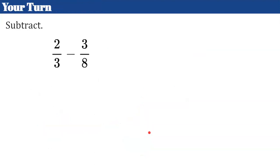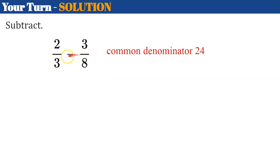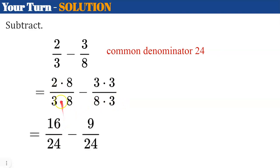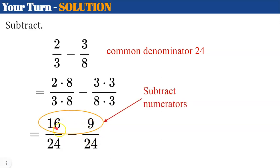Your turn. I'd like you to find the difference — go ahead and subtract, and come back when you're ready to check your work. Welcome back. We're going to find a common denominator of 24. Three and eight do not have any factors in common, so 3 times 8 is 24. For two-thirds, multiply both numerator and denominator by 8. For three-eighths, multiply both numerator and denominator by 3. Two times 8 is 16 over 24, and 3 times 3 is 9 over 24. Subtract the numerators: 16 subtract 9 gives me 7 over 24. This is in simplest form — there are no common factors between numerator and denominator, so that is my difference: seven twenty-fourths.